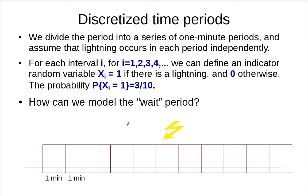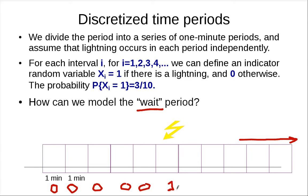We're going to use that kind of experiment to model the wait period. So we have this one-minute period, and it might be the case that you have to wait longer than 10 periods. We define an indicator random variable x to be 1 if there's a lightning — so it's going to be 0, 0, 0, 0, 1, 0, 0, and so on. We want to model this wait period, counting the last period where we have to wait.